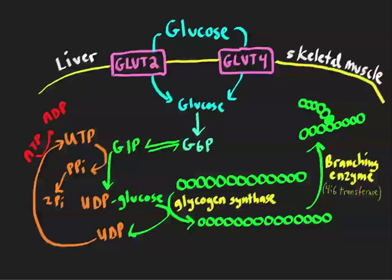Now let's look at the reaction of glycogen synthesis in more detail. Here is a cartoon schematic of glucose being taken up by the two cell types — hepatocytes and skeletal muscle. There are different glucose transporters involved. We're familiar with the GLUT2 transporter, present on the liver and on beta cells of the pancreas, where it's important for glucose-mediated insulin secretion. In the case of the liver, it's always present and glucose is taken up down its concentration gradient.